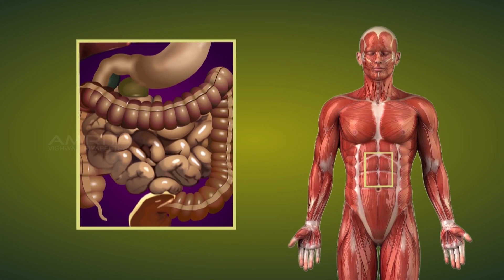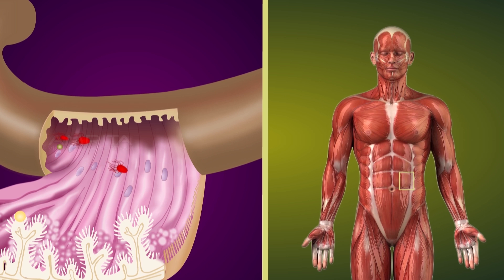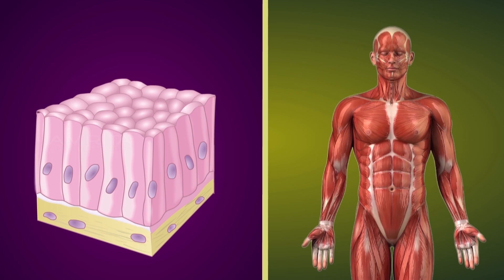Columnar epithelium acts as an impermeable barrier against any bacteria that could be ingested but is permeable to any necessary ions. It is tall and shaped like a column.